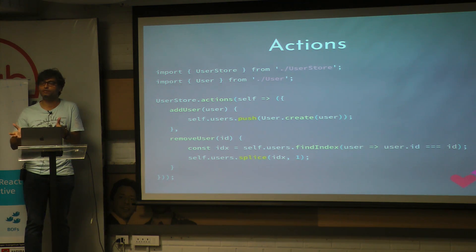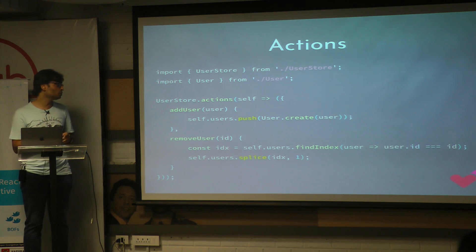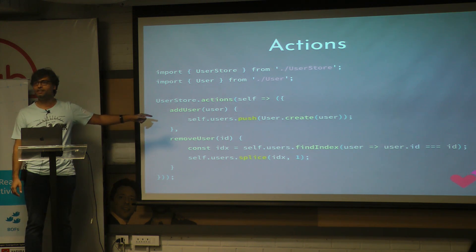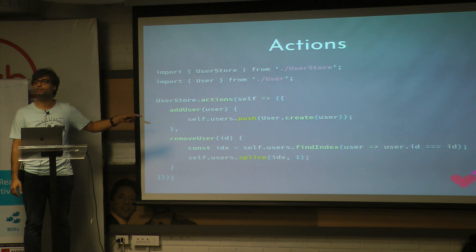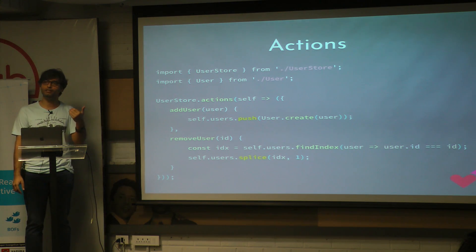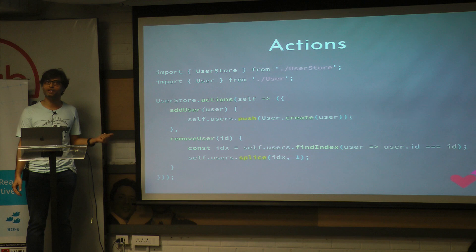The model by itself is immutable because nothing else can actually change anything inside of it. But there are specific defined actions which you can define on a model, which are the only way to mutate that object. So if you were using Redux, this might seem strange to you — because instead of concatenating something to an existing array, here I'm just going ahead and pushing something to the array. Similarly, if I were to remove a user, I'm just using the splice method from JavaScript arrays, which literally mutates the array and removes the element.